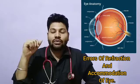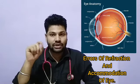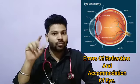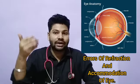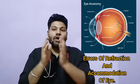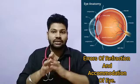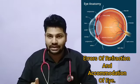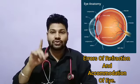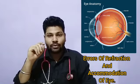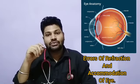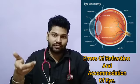Myopia refers to nearsightedness. The person is able to see the nearby object very clearly but cannot see the far-by object. We can use a concave lens to treat this myopia. Myopia is a refractive error, also called nearsightedness. It can also be corrected by using contact lenses or LASIK surgery, which we will discuss later in this video.